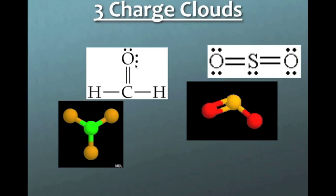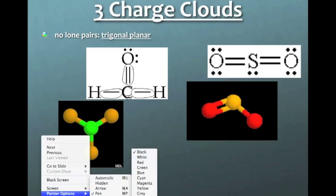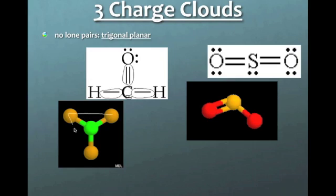So what if you have three charge clouds? Well, this first instance I have here, this is formaldehyde CH2O. And the carbon is double bonded to the oxygen and then single bonded to each of the hydrogens. And you can see here that you don't have any lone pairs. We're just talking about the central atom, remember. There are no lone pairs, but you have one, two, three charge clouds. And in order for these three clouds to be as far away as they can be, they're going to be what's called trigonal planar. They're going to form this flat triangle shape. And so this whole shape will be in the same plane.